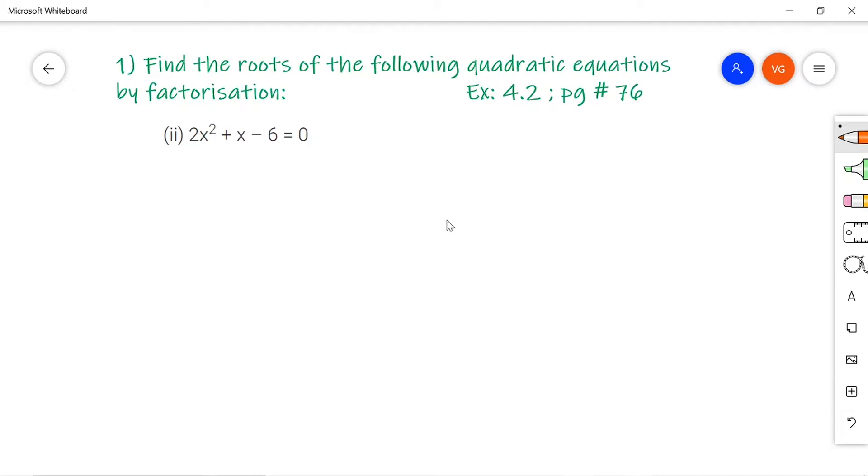On comparing this with the standard form, I have to multiply these two. That is the coefficient of x² and the constant term. So, 6 into 2 is 12. For this I need to write down the factors such that the sum or product is equal to the middle term coefficient, that is nothing but 1.